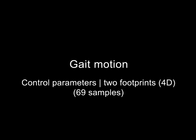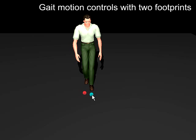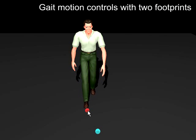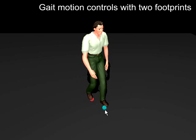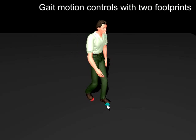Now we demonstrate more detailed control over gait generation by using two footprints. The control space is four-dimensional, but our method is still effective even for such a high-dimensional space.